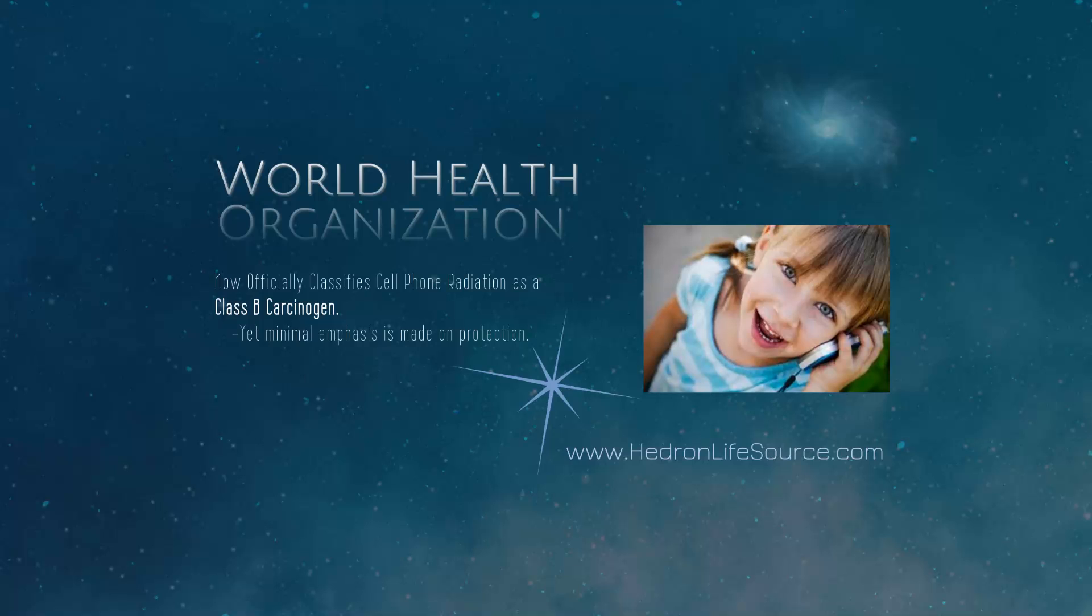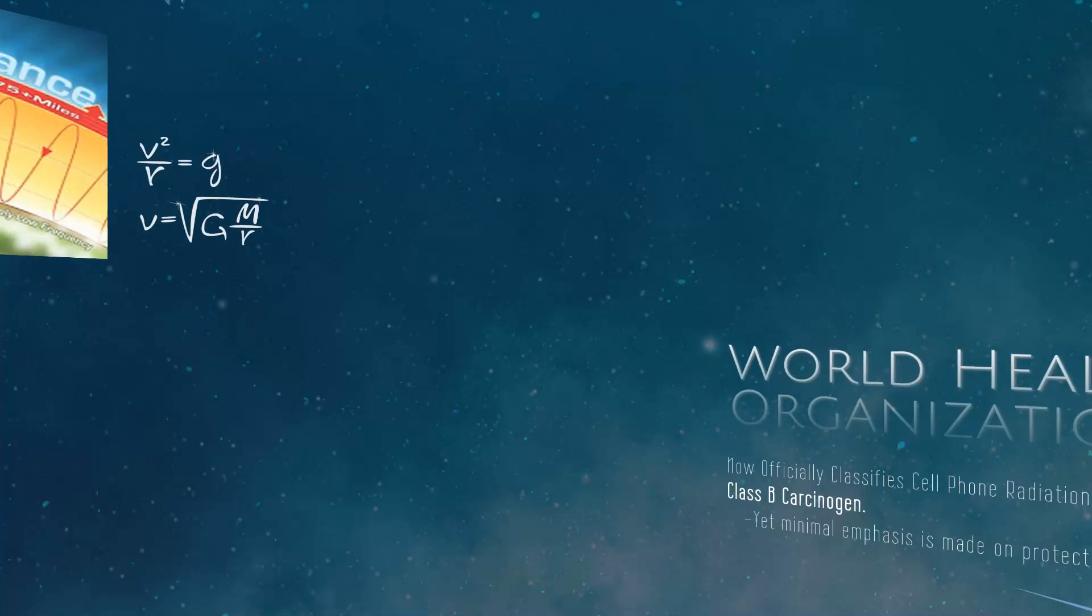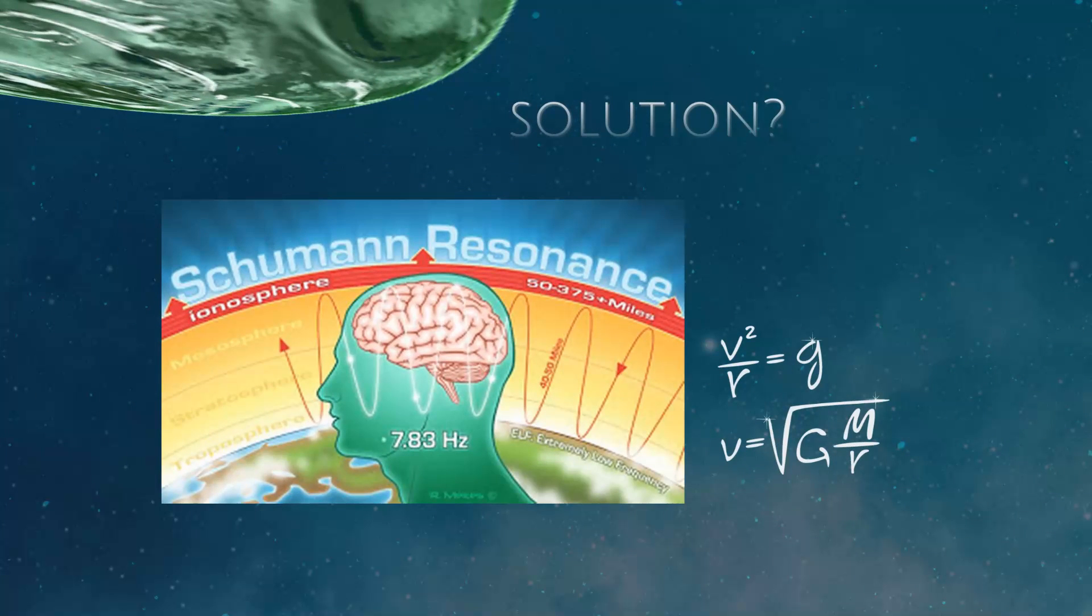So what we did was we utilized the Schumann resonance, 7.83 hertz. Everybody needs that resonance. It is everywhere, but when it's targeted or localized to a specific device, that can help in greatly harmonizing the frequency that is put out by that device. The Hedron Harmonizer has 12 specific minerals and crystals along with scalar energy and the Schumann resonance impregnated into it to give us that frequency effect, that harmonizing effect to the body and to all of our cells.